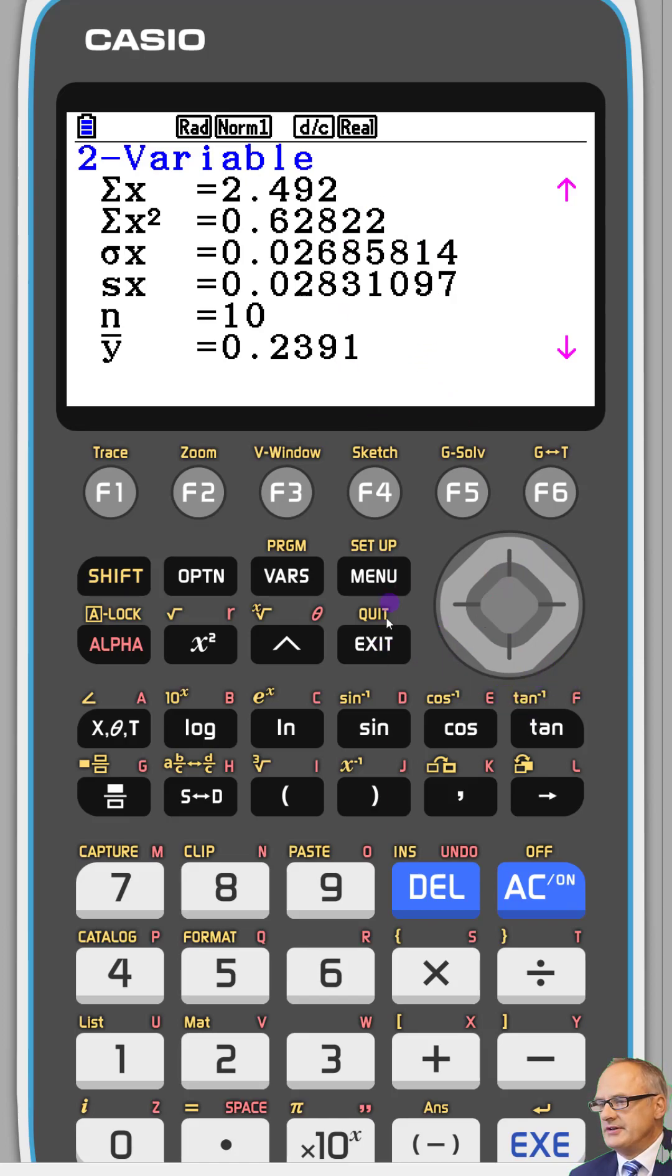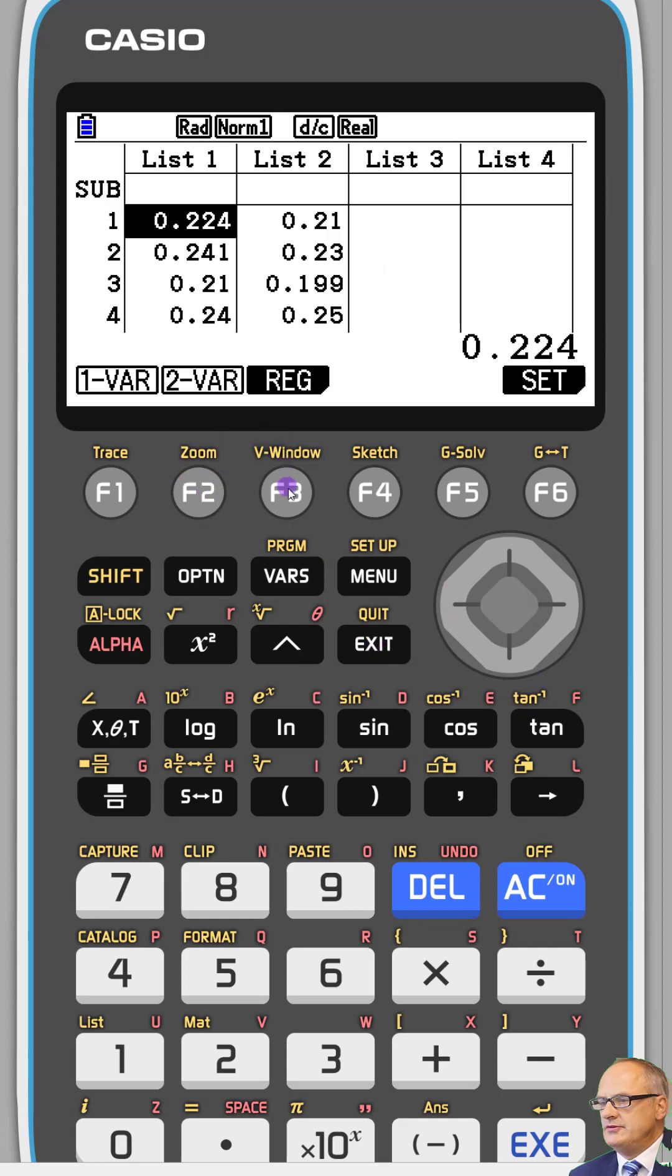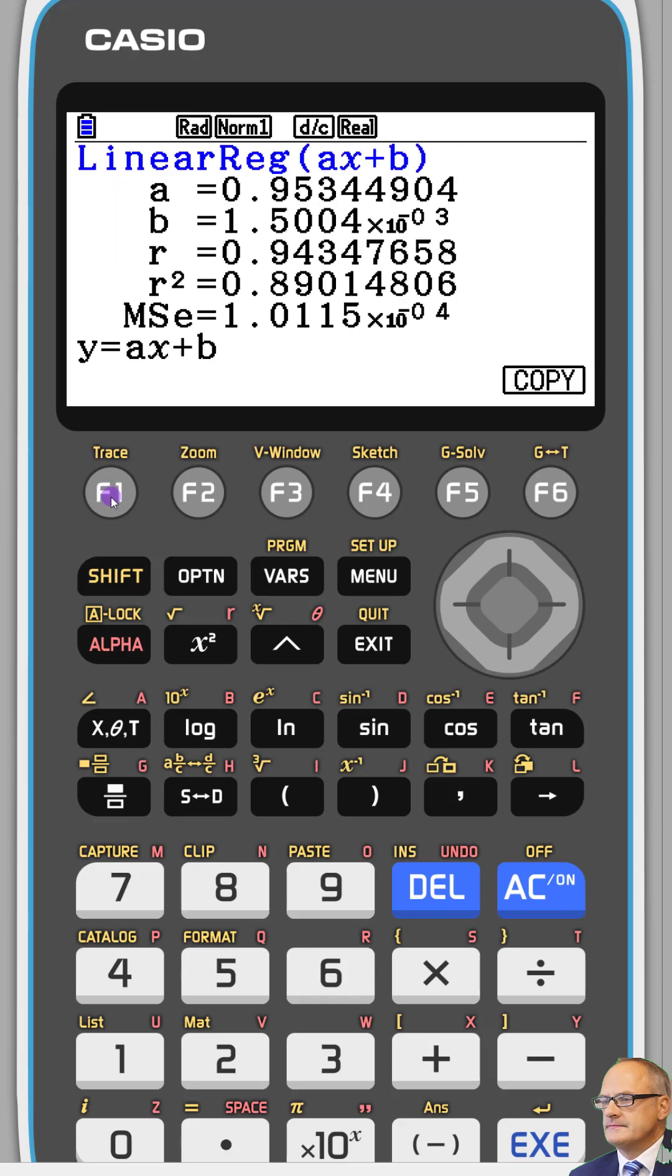But even better, if we exit from this, is if we do the regression, X, X plus B. So A is the gradient of our line and B is the Y intercept. We can see that the gradient is going to be nearly one and the Y intercept is almost zero. And the R value is 0.94.